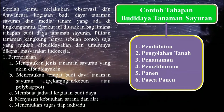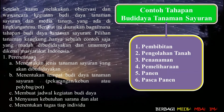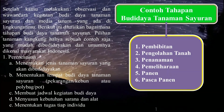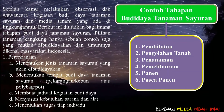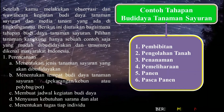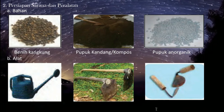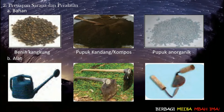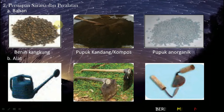Contoh tahapan dimulai dari pembibitan budidaya tanaman sayuran, kemudian pengolahan tanah, penanaman, pemeliharaan, panen, serta pasca panen. Untuk semuanya, tahapan ini silahkan nanti didokumentasikan dan dicatat sesuai LK.